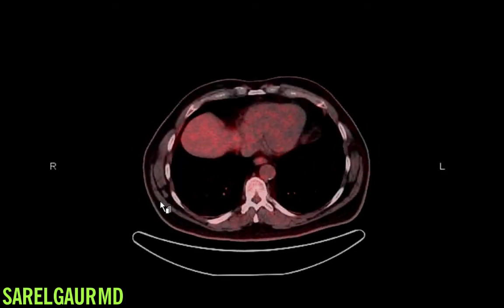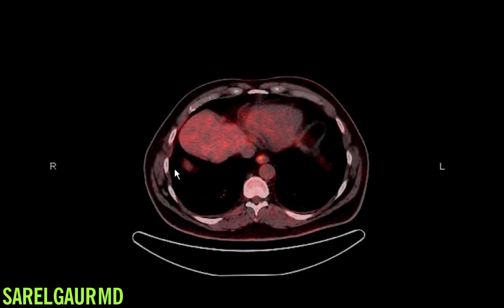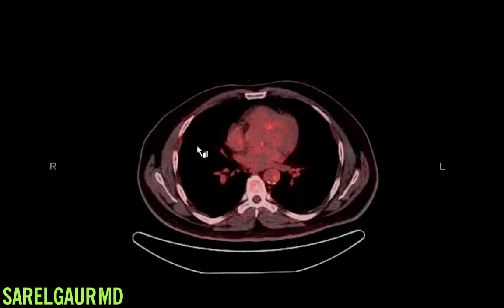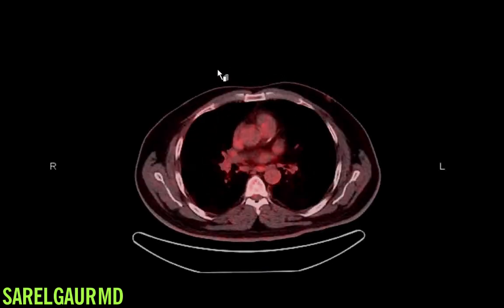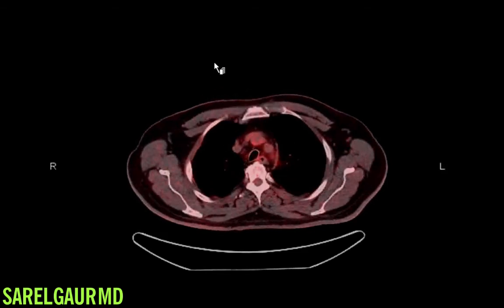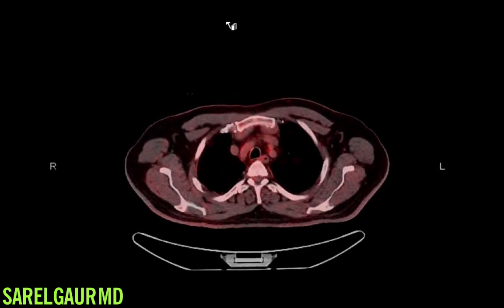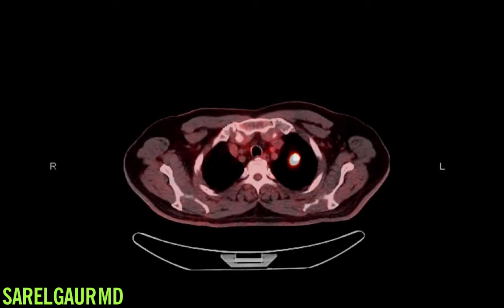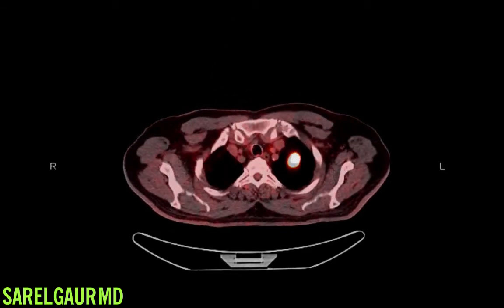Now, could this represent other things? Yes — theoretically, it could be a focus of infection, or it could still represent a healed area of tuberculous infection. From here, we could either go to surgery to resect this portion of lung, or we could do a minimally invasive CT-guided biopsy to confirm or exclude malignancy.